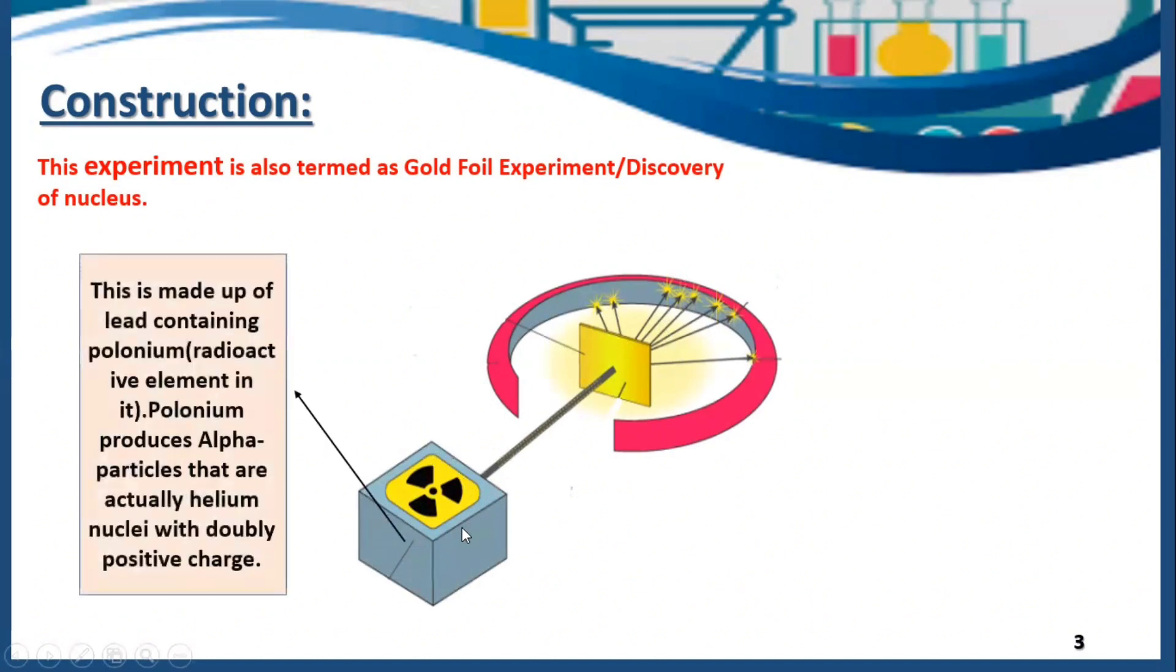This is a radioactive source. The outer part is made up of lead and inside we have polonium. The main reason for choosing lead is because lead absorbs all the alpha particles and doesn't allow them to scatter. Polonium is a radioactive element which gives us alpha particles. Alpha particles are helium nuclei that are doubly positive.